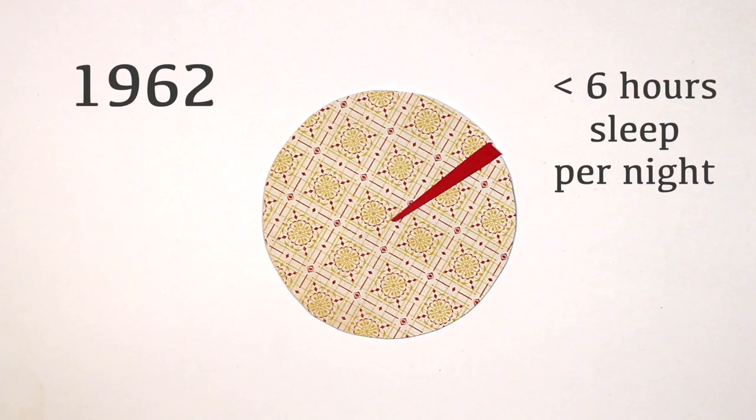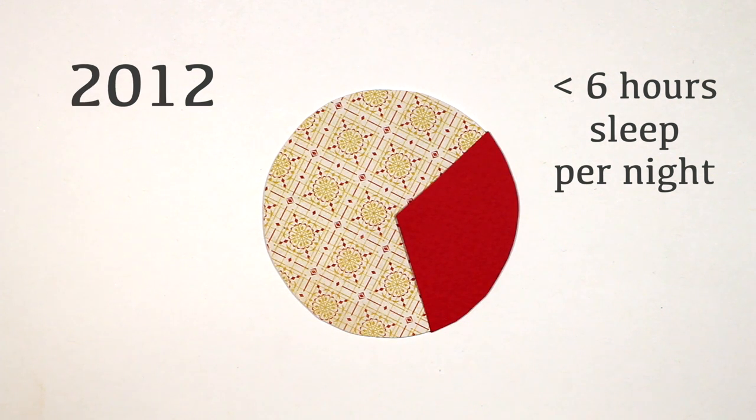50 years ago, 3% of working Americans reported getting less than 6 hours a night. Now it's 30%. Cutting off the last 2 hours of the night means you're missing out on your most important REM time.